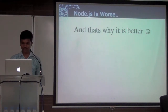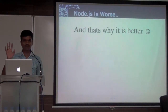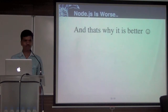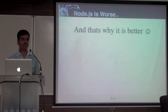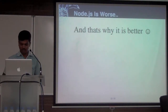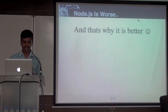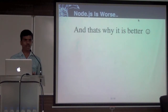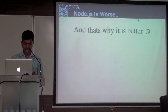What is 'worse is better'? It's a study from about 10 years ago. What it tries to say is how software you build is accepted by the community. In order for software to be successful, it should be very simple. Being simple — meaning having fewer features — is the 'worse' part. But if it's simple, people tend to adapt to it quickly.